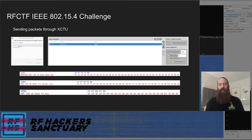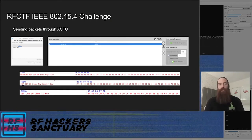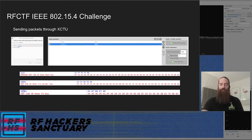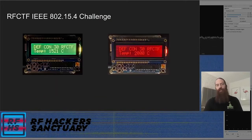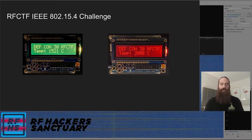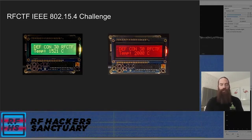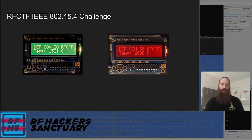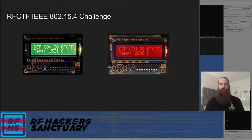Finally, if you modify the packet to include both the updated temperature data and also the correct checksum for that data, you get the actual TX key. If you send a temperature outside of the valid range just a little bit, the screen turns yellow. If you send it way over correctly, the screen starts flashing red as though there were an alarm going off — and that's when it transmits the key back to you.